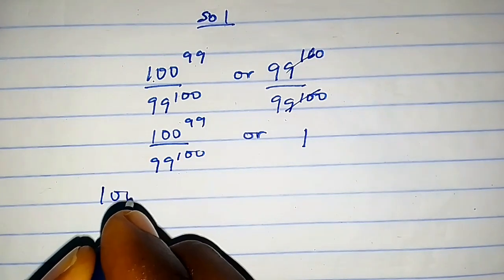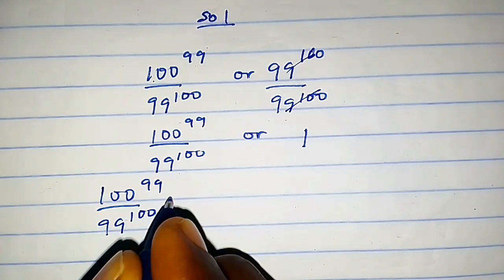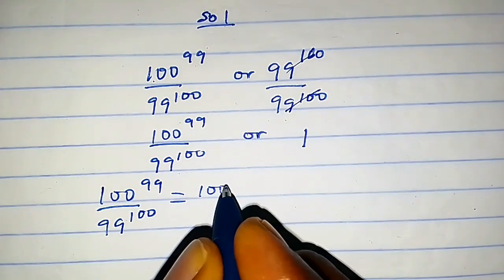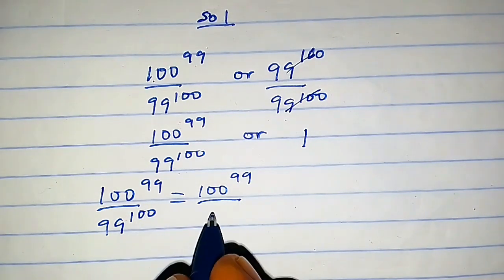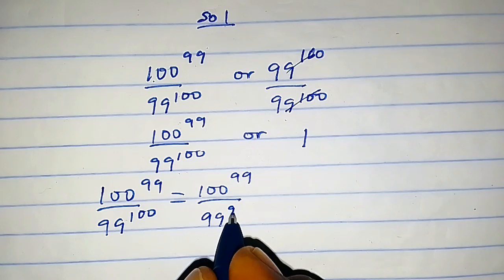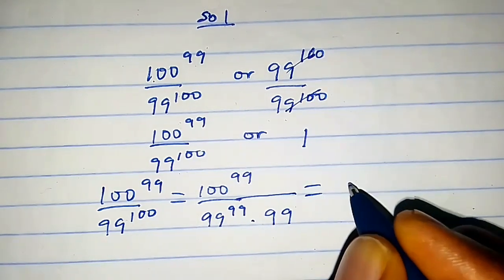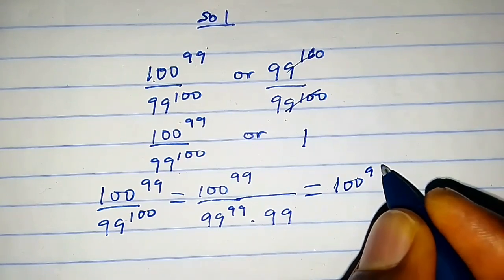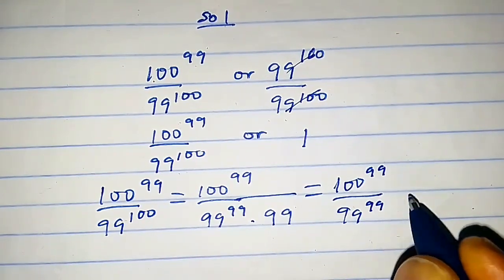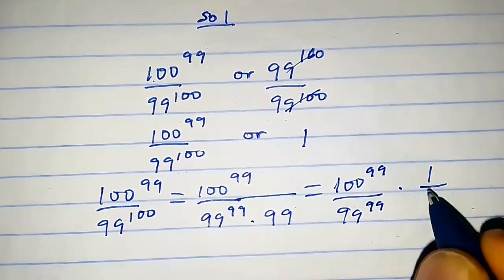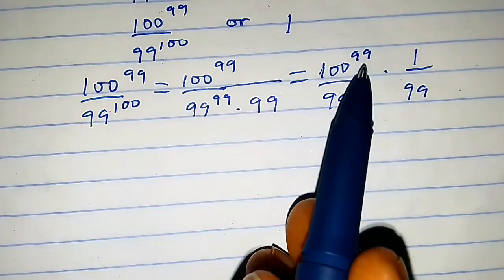100^99/99^100 can be written as 100^99/(99^99 × 99). This can also be written as (100^99/99^99) × (1/99). Observe that the exponents here are the same.